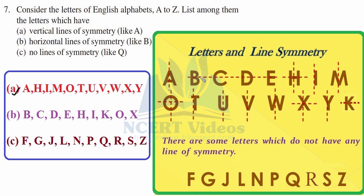Letters with a horizontal line of symmetry include: B, C, D, E, H, K, O, and X. Letters with no lines of symmetry include: F, G, J, L, N, P, R, S, and Z.